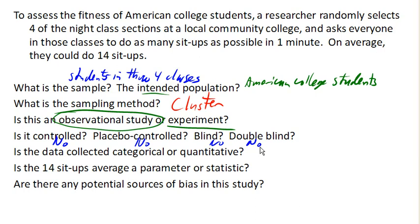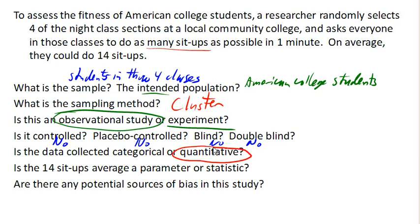So the data that we're collecting — is it categorical or quantitative? We're recording how many sit-ups they can do. That's going to be a number, and we can do calculations with that number, so this is quantitative data.